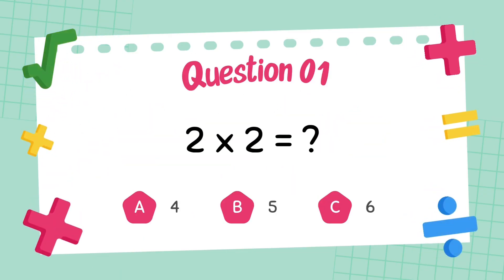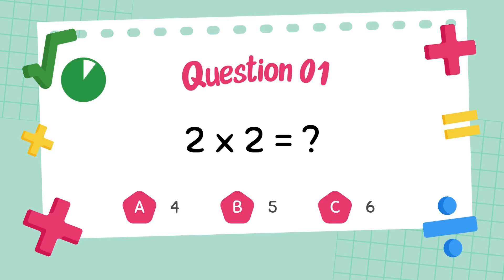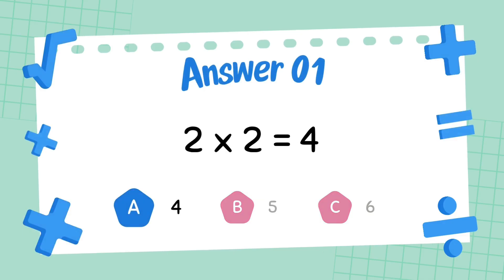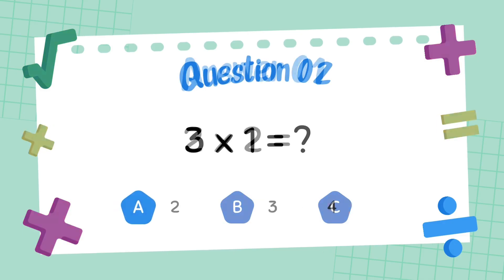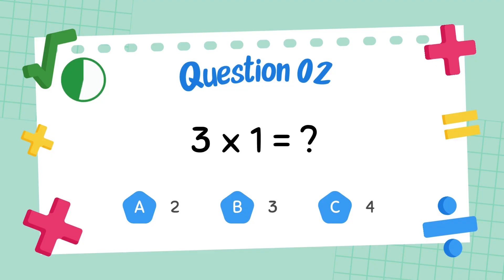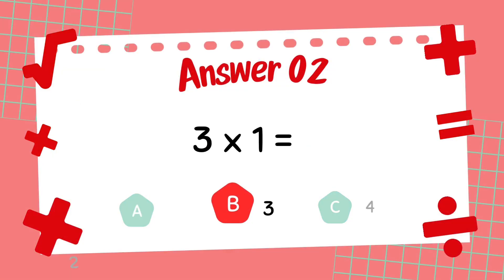What is 2 multiply 2? The answer is 4. What is 3 multiply 1? The answer is 3.